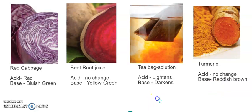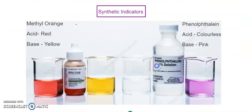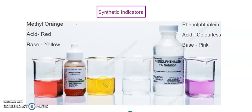The next type of indicators — these were used in olden days and we still use them, but not daily. More frequently used are synthetic indicators. The two major synthetic indicators are methyl orange and phenolphthalein. Methyl orange, when added to an acid, changes color to red; when added to a base, it changes to yellow.